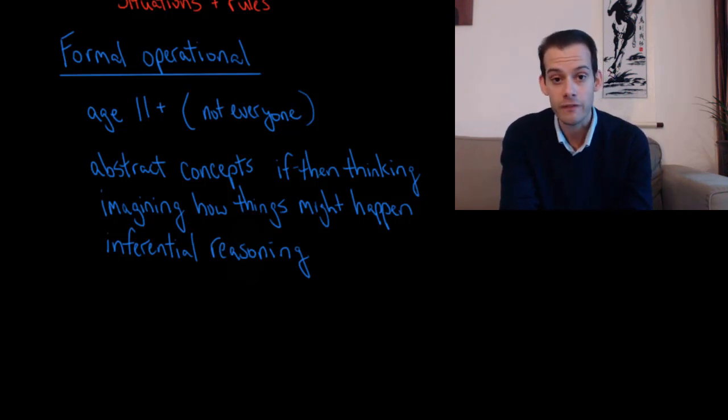Once somebody can do all these things then they would clearly be in this last stage, the formal operational stage. So those are the four stages of Piaget's theory of cognitive development: the sensory-motor stage, the pre-operational stage, the concrete operational stage, and lastly this formal operational stage. I hope you found this helpful. If so, please like the video and subscribe to the channel for more. Thanks for watching.